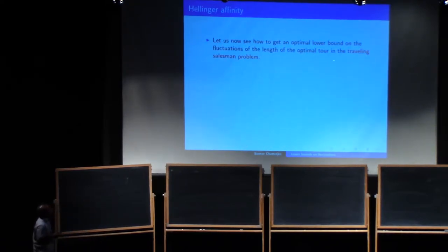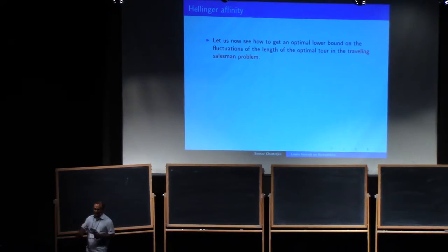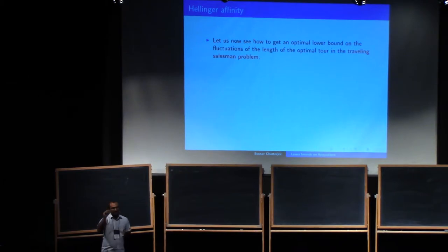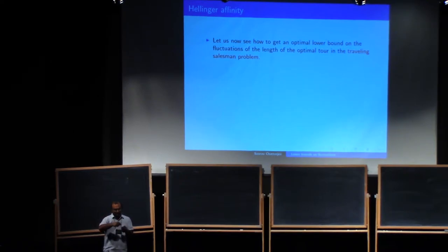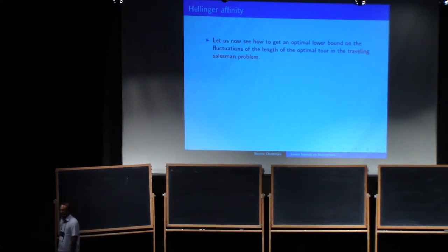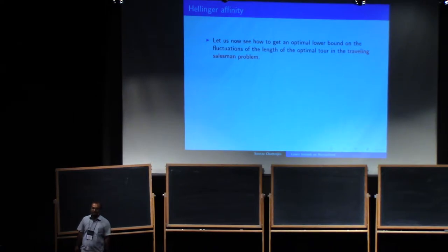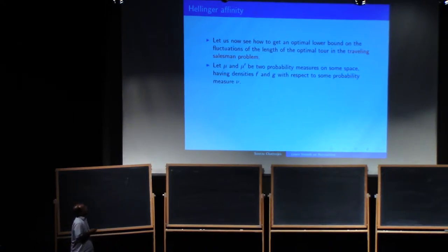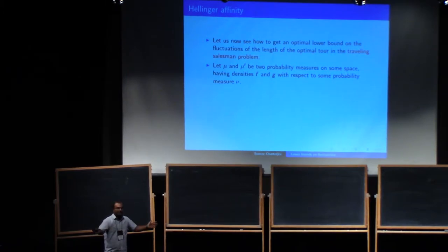Now let us see how to get the optimal lower bound on the fluctuations of the length of the optimal tour in the traveling salesman problem. This is a much harder example. The stochastic TSP: you have n random points on the plane according to some distribution, iid points, and you want to find a tour through these points minimizing the total distance traveled. You ask about the fluctuations of the optimal tour length — this can be in 2D or D dimensions. There are a few systematic steps, and whatever I outline carries over to many other problems, not just this one.